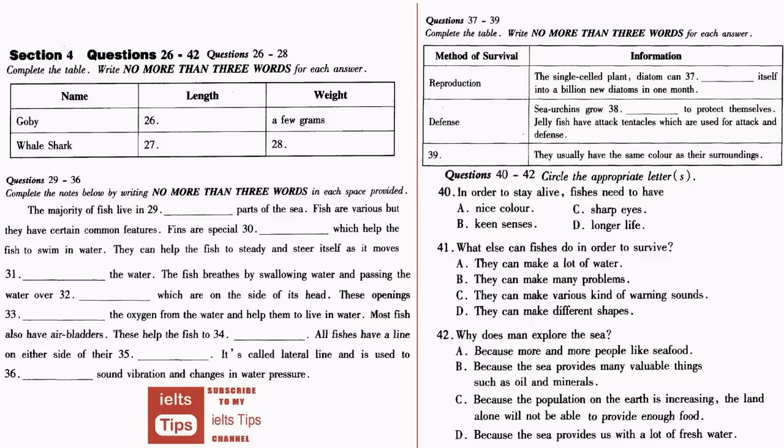Most fish only live for a few months to a year. Although fish are so different, they have certain common features. All of them have special organs that help them to live in water. These special organs are fins and gills.